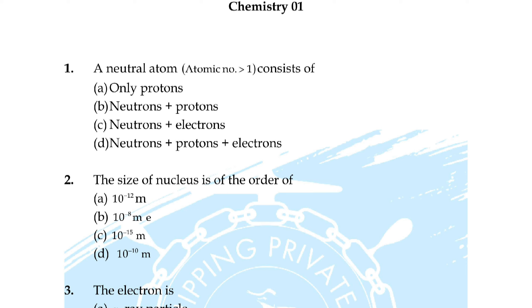Question number 11: in which of the following species does the central atom have a type of hybridization which is not the same as that present in the other three? Correct answer is option A.